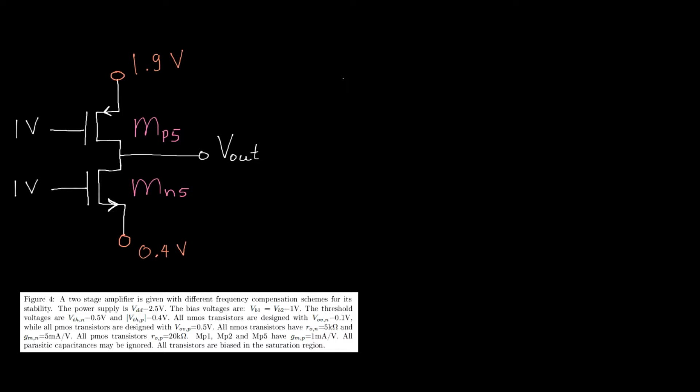With this information, we can now start answering the question, what condition needs to apply to Vout, such that both transistors operate in saturation. For MP5 to operate in saturation, we need to say that the source drain voltage of our PMOS transistor is larger than the overdrive voltage. And that overdrive voltage is given in the caption, and that is 0.5 volts. We know what the source voltage is, that's 1.9 volts. And we can subtract from that the drain voltage, which is the output voltage. So from this, you find that the output voltage needs to be smaller than or equal to 1.4 volts.